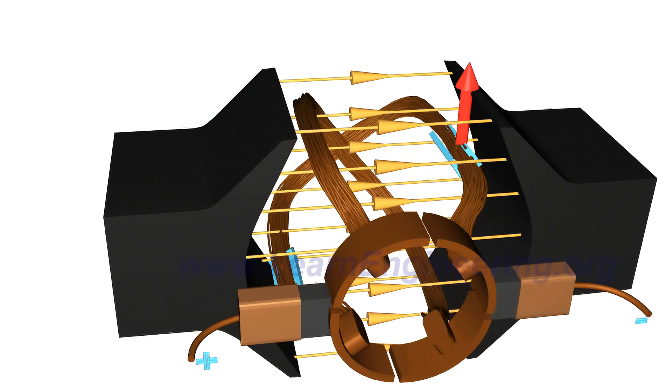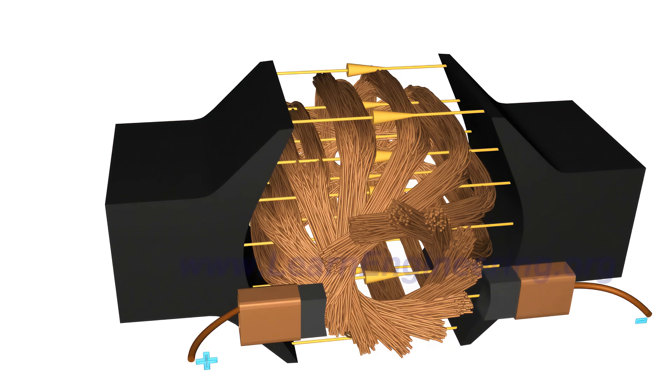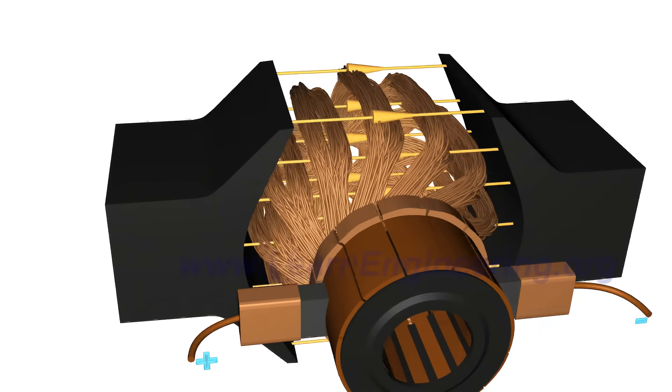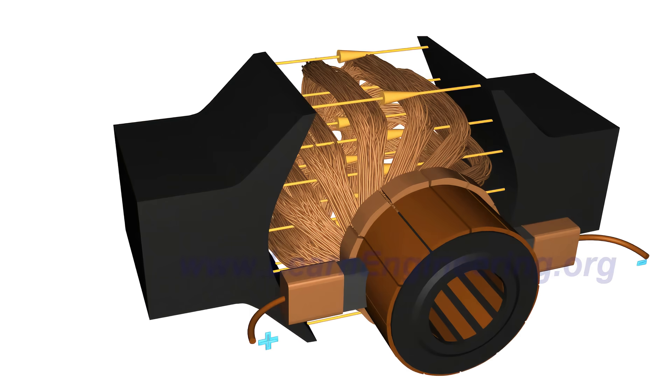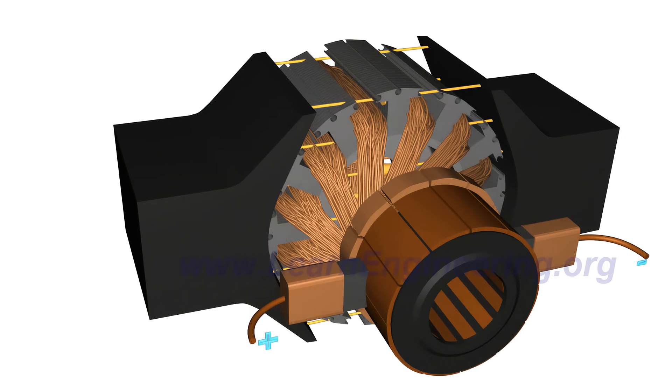Moreover, the more such loops, the smoother will be the motor rotation. In a practical motor, the armature loops are fitted inside slots of highly permeable steel layers. This will enhance magnetic flux interaction.